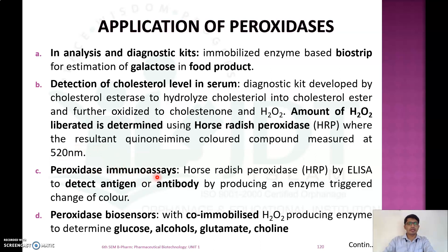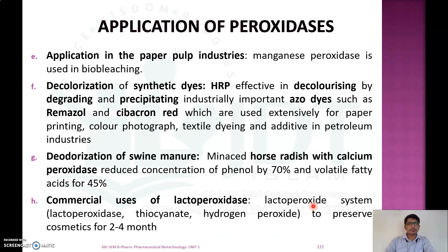In immunoassay, horseradish peroxidase is used by the ELISA method to detect antigens and antibodies by producing enzyme-triggered color change. Peroxidase is also used as a biosensor, co-immobilized with hydrogen peroxide-producing enzymes to determine glucose, alcohol, glutamate, and choline.